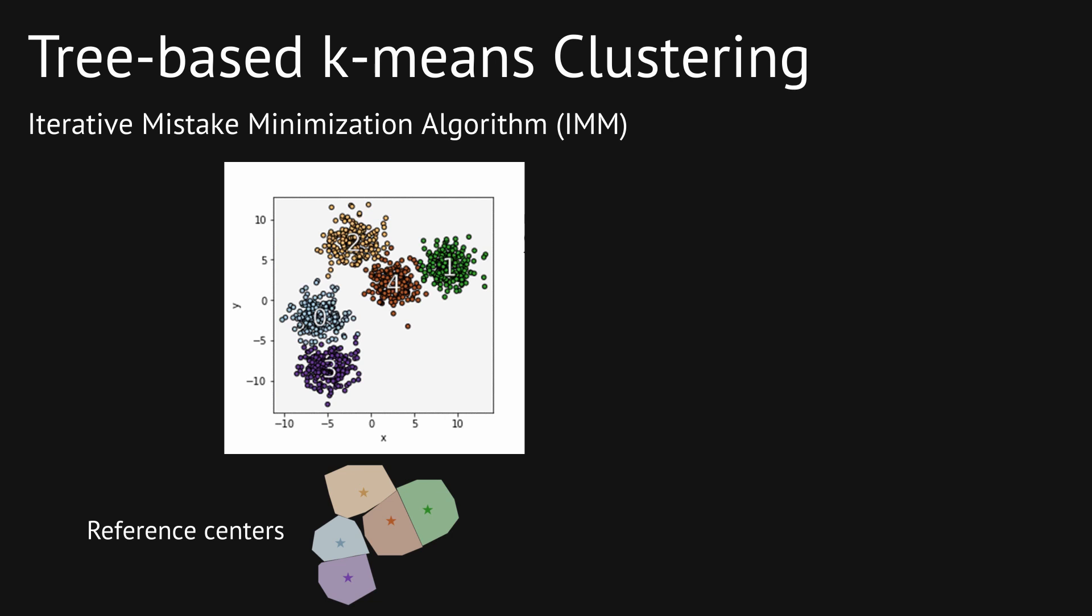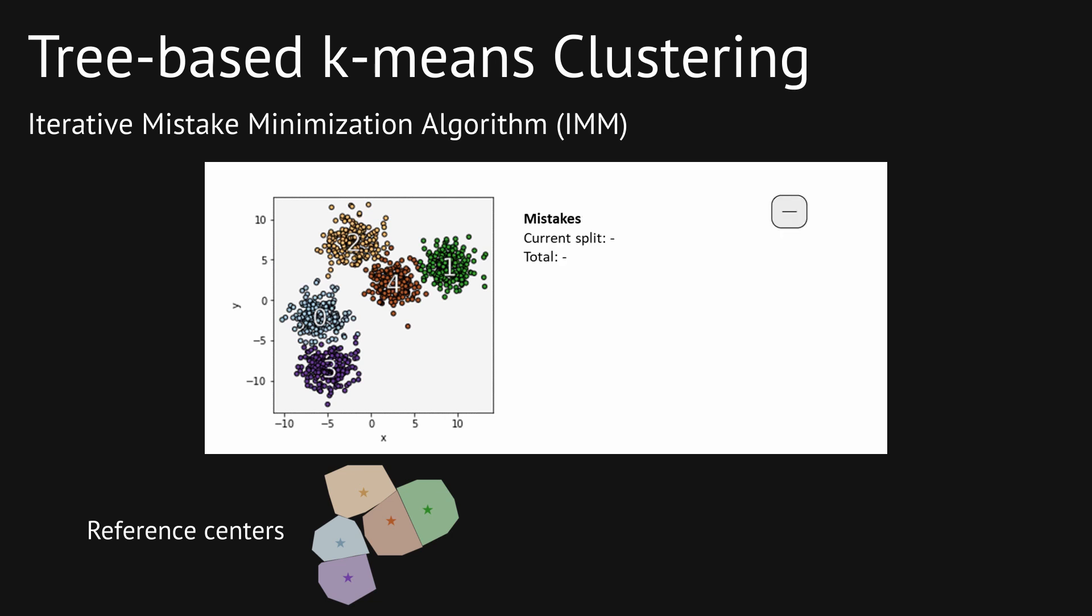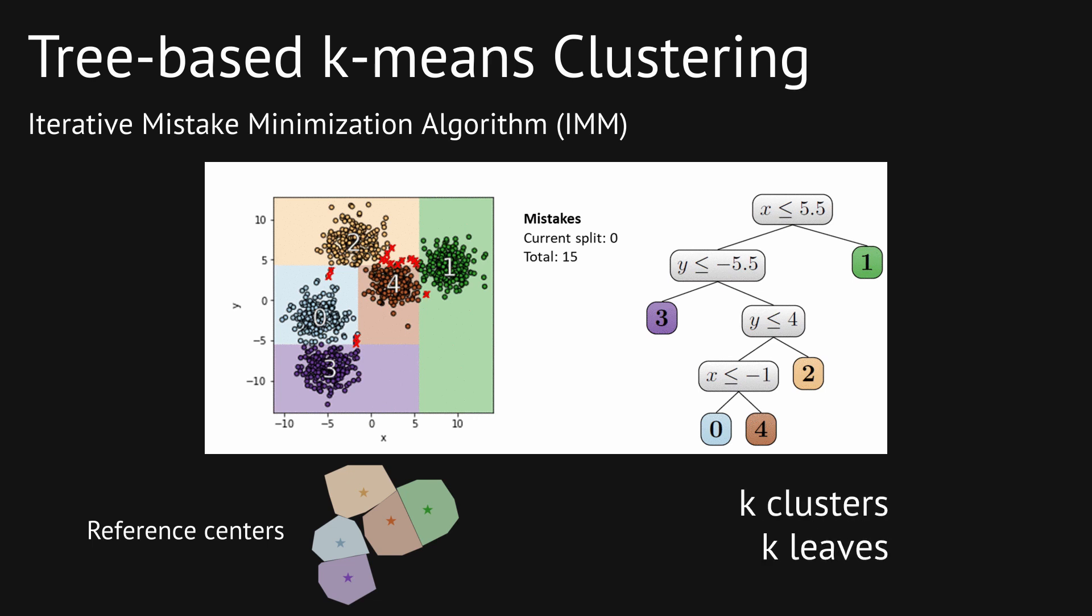Then we iteratively build the tree from the top down. Each time we add a node, we choose the best feature and best threshold so that the number of mistakes is minimized. The mistakes marked in red are the points that are split away from their reference center. As we go along, we recursively refine the clustering and we stop when there are k leaves with one cluster per leaf.